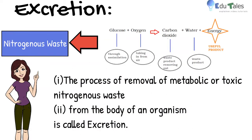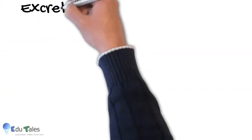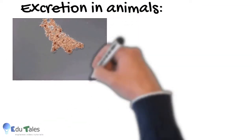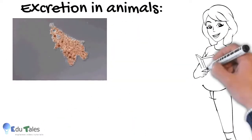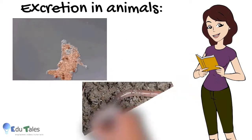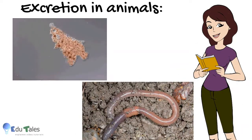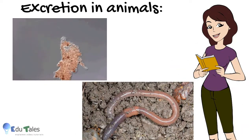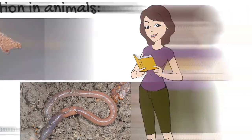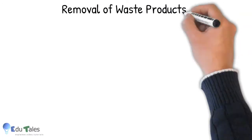Let us see excretion in some animals. In single-celled animals such as amoeba, the waste materials like carbon dioxide and ammonia are either removed by diffusion or through vacuoles. In earthworm, certain special excretory organs are present which help in removal of waste. Sometimes skin also helps.